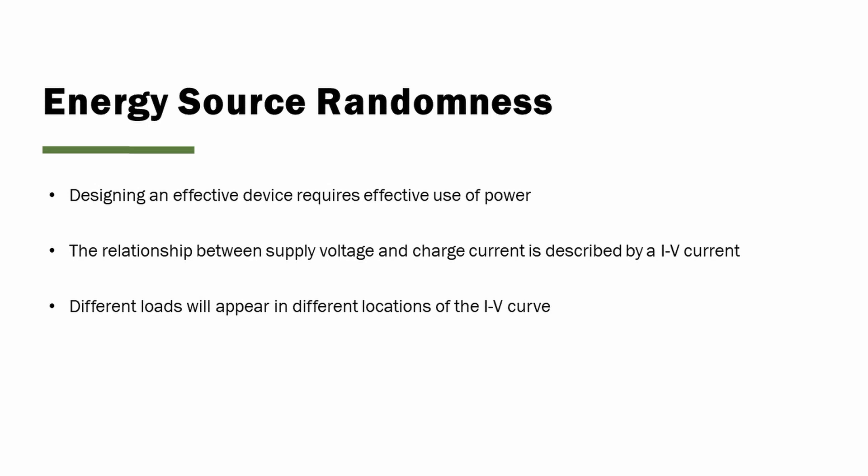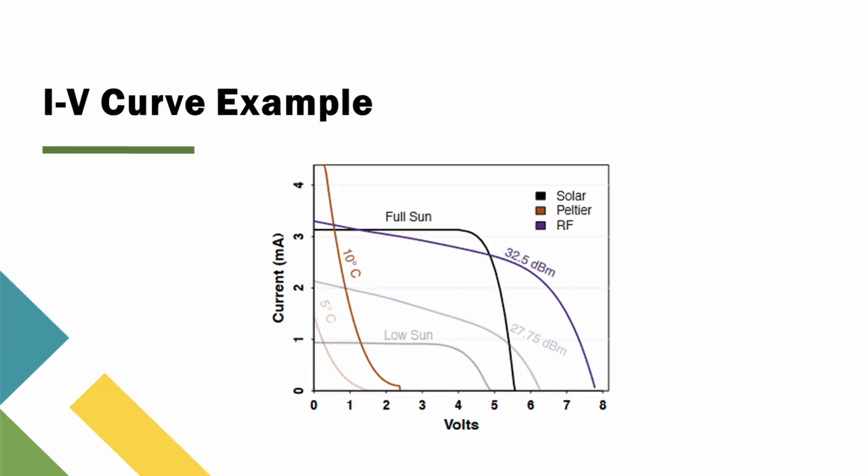Let's move on to some more background and talk about energy source randomness. The nature of devices that run on harvested power means that programs have to be designed to be opportunistic. Designing an effective device requires effective use of power. There is an intrinsic relationship between what a device receives via the supply voltage and its charge current, and this is described by an IV curve. Each harvested energy family will have a curve with a common characteristic shape, but due to load and environmental changes, there will be a slight modification to the shape.